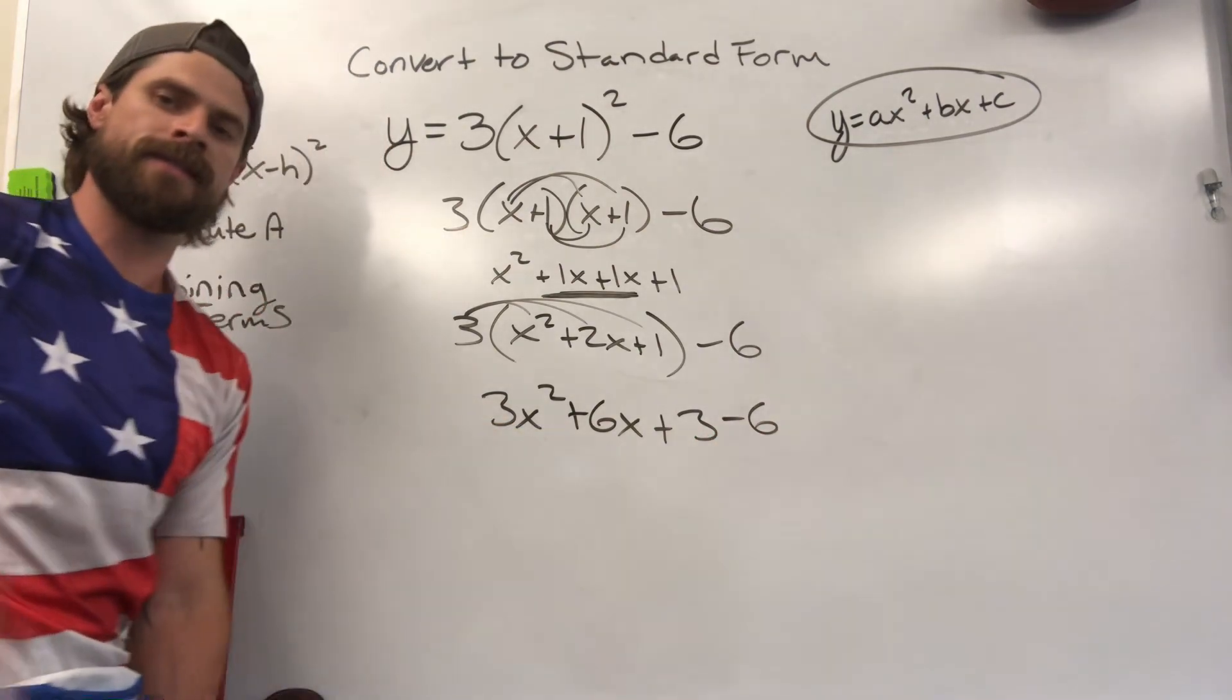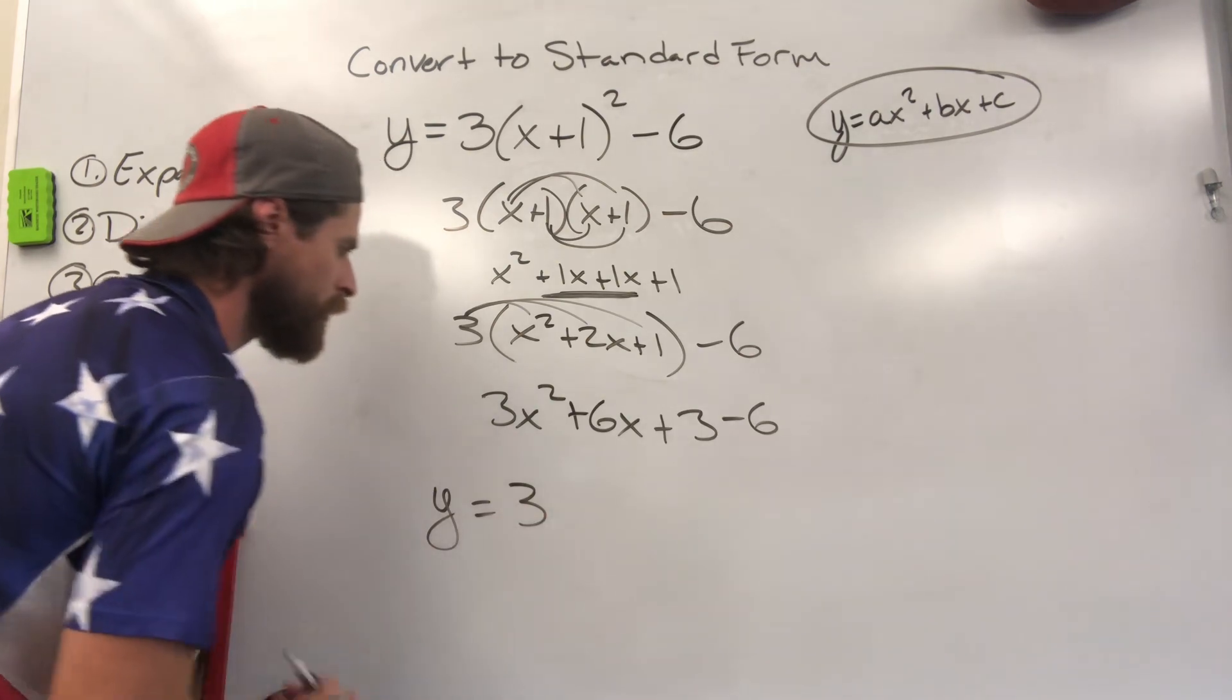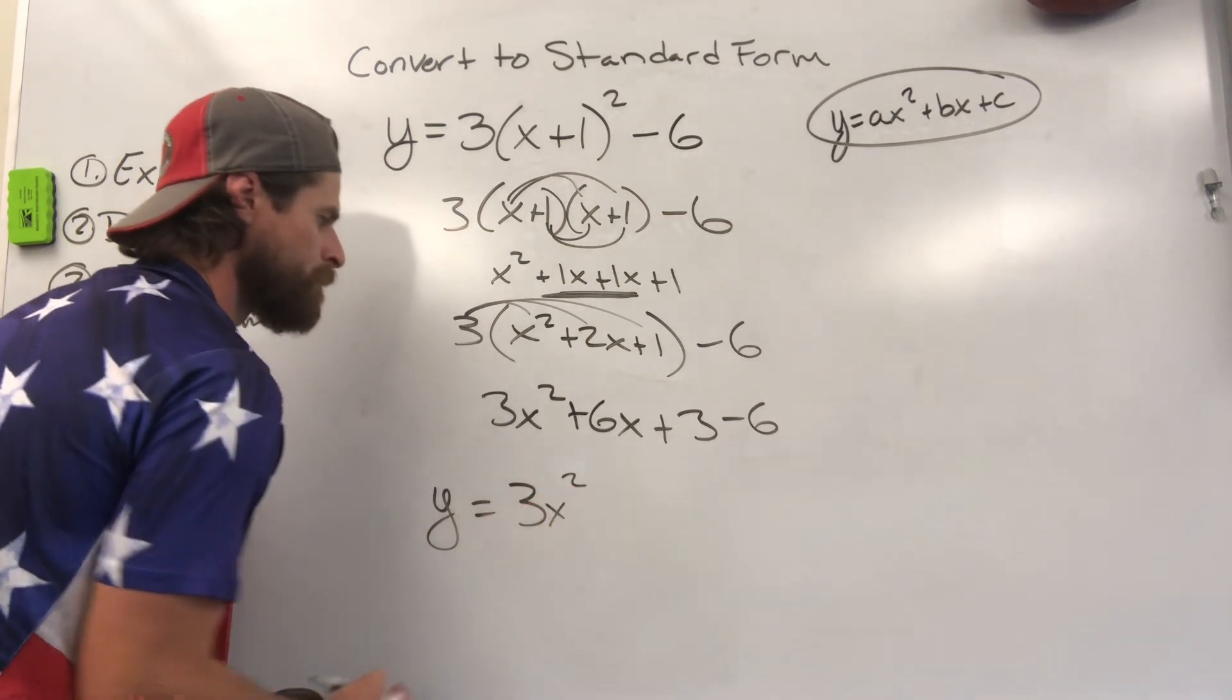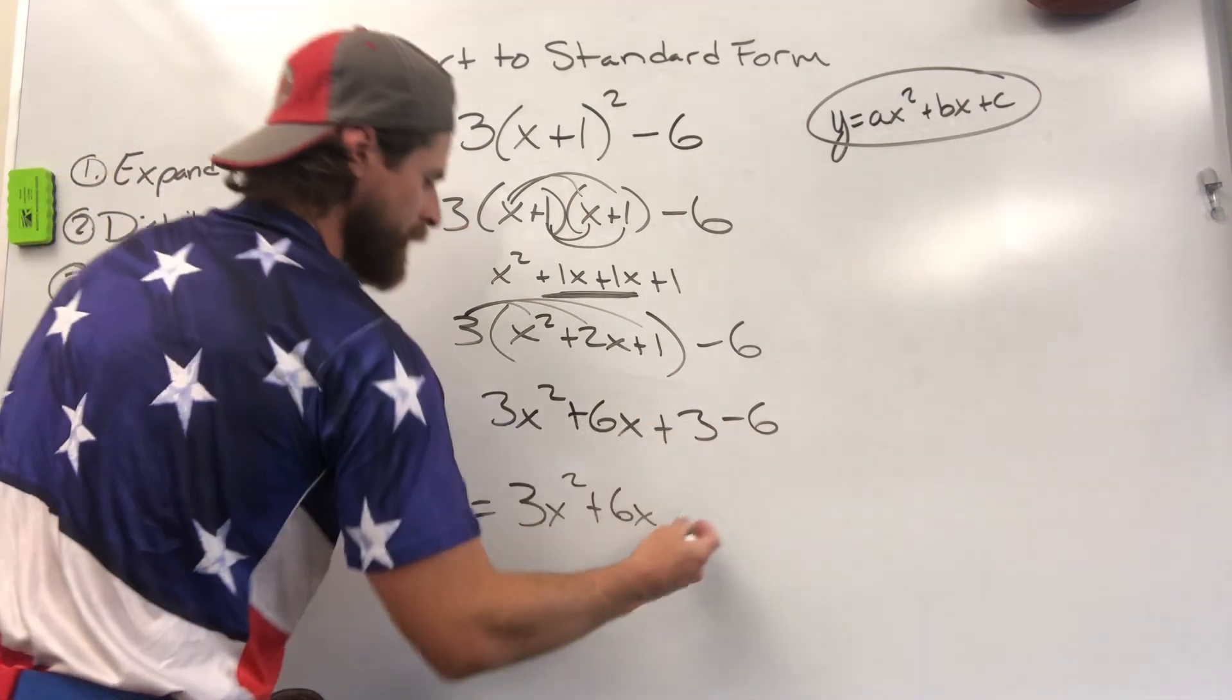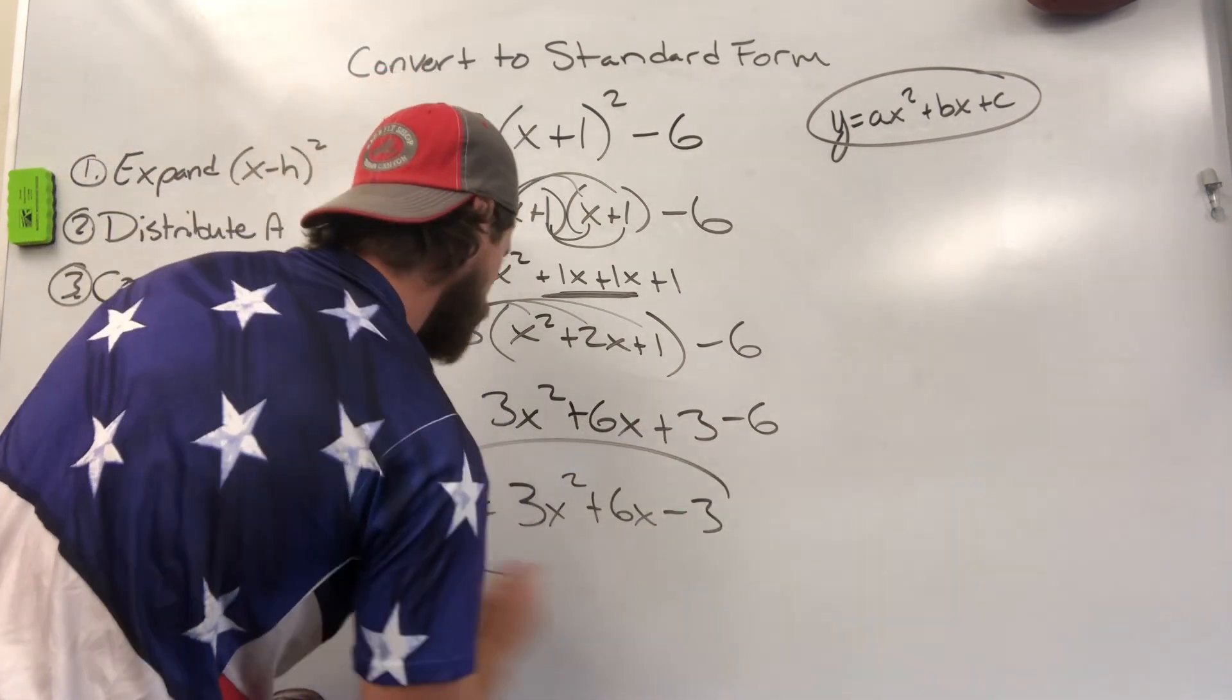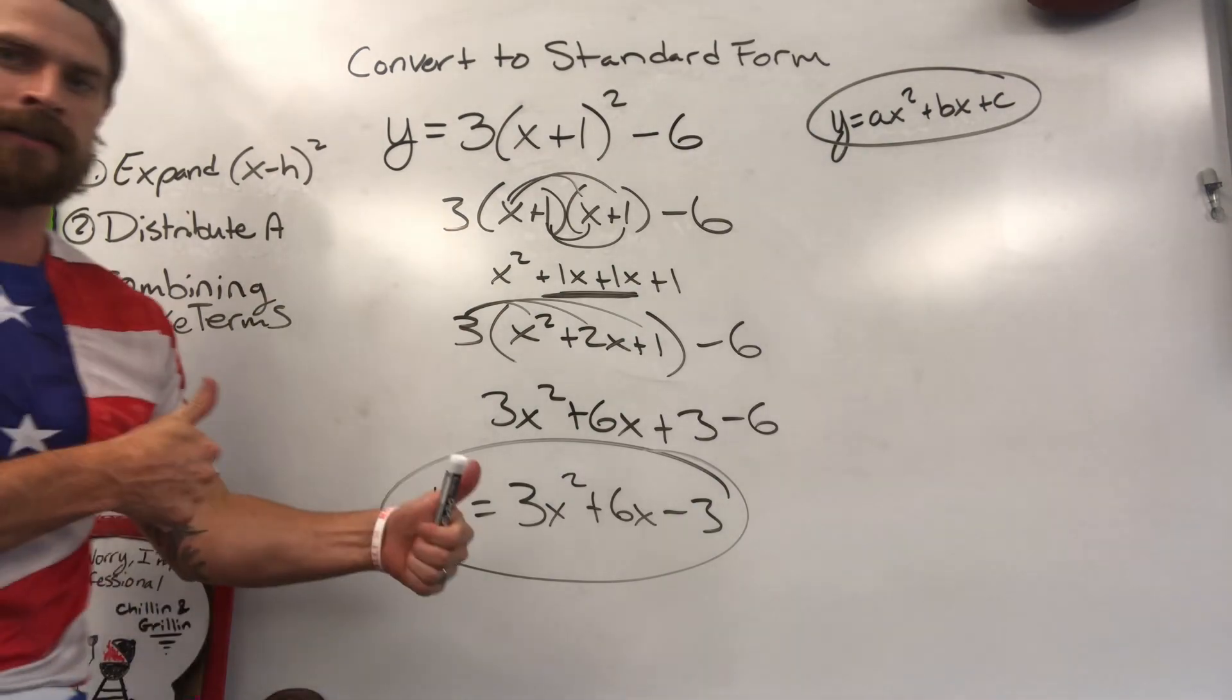Three minus six is negative three. So our final result is y equals three x squared plus six x minus three. Study hard and good luck on your upcoming test.